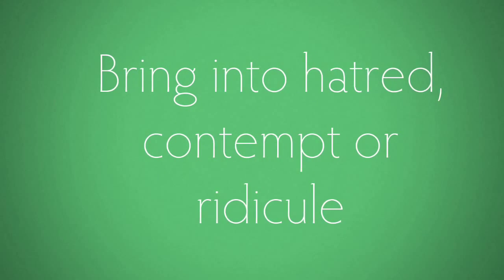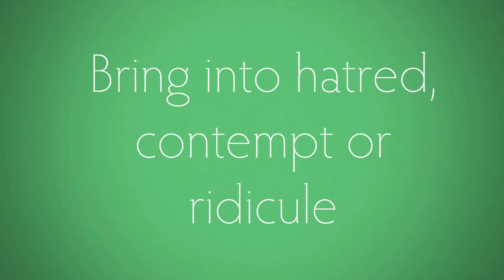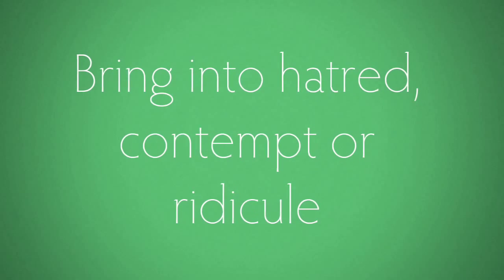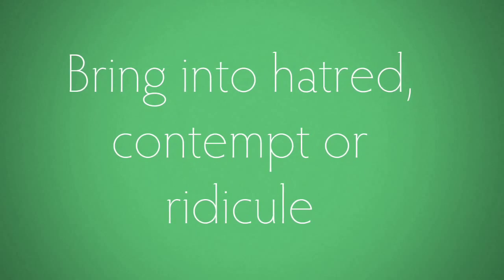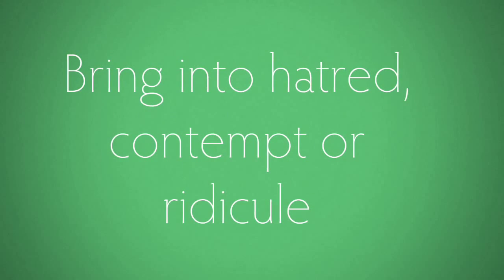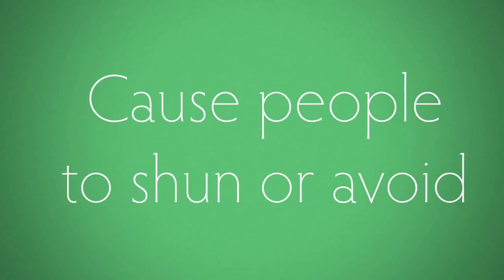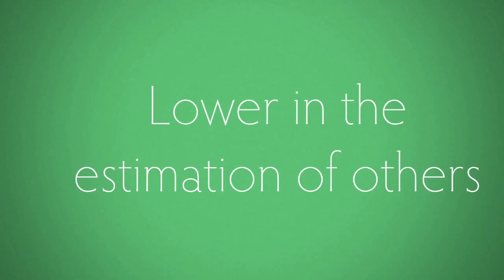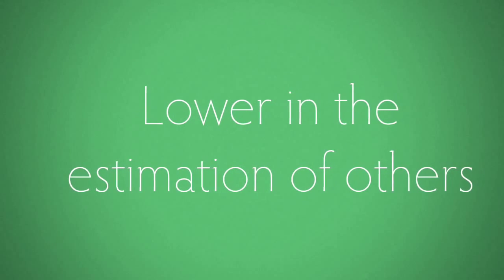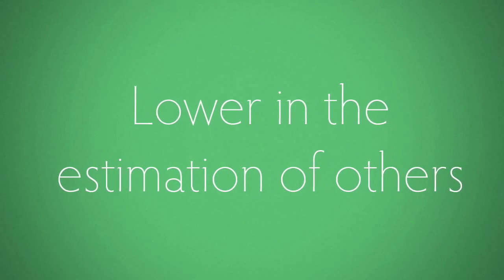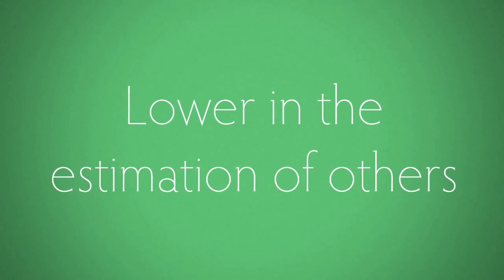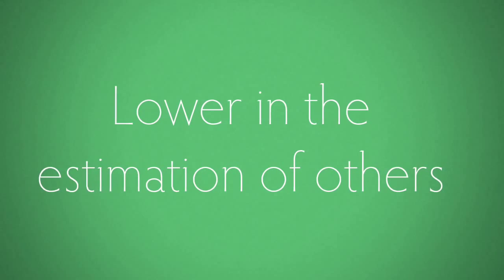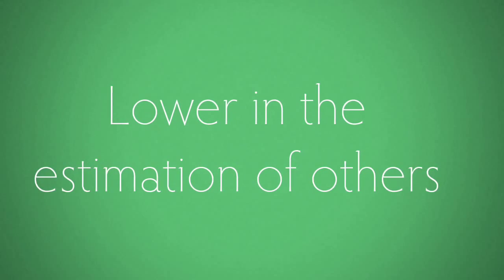Once you have identified the imputations, you then need to see whether they are defamatory. The test at law is that the statement must bring the plaintiff into hatred, contempt, or ridicule; or it must cause people to shun or avoid the plaintiff; or it must lower the plaintiff in the general estimation of the public. These are alternatives — the plaintiff only needs to establish one of these factors to establish defamation.